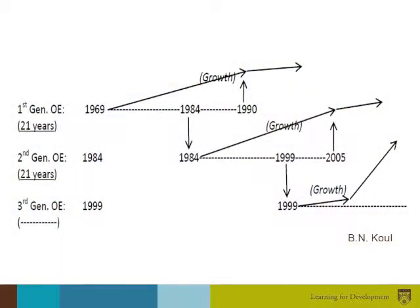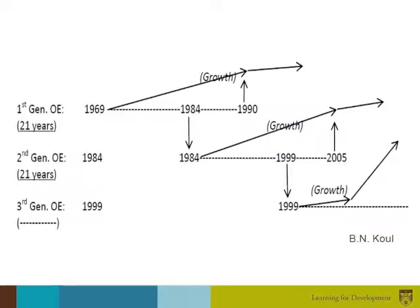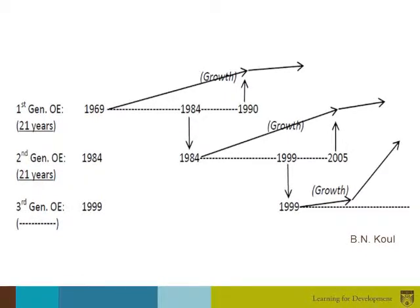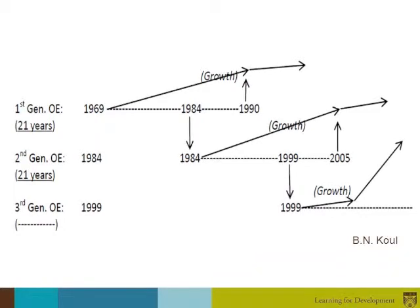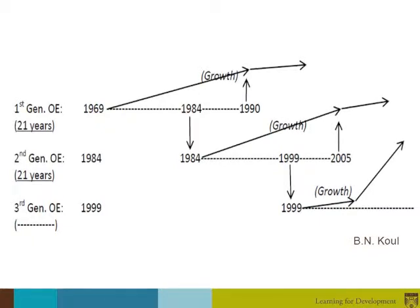This slide sums up the emergence of the three generations of open education models. The first covers the 21 years from 1969 to 1990, the second from 1984 to 2005. In both cases the development is gradual. In the third generation, which could be seen to begin in 1999, we see a phenomenal growth showing that, thanks to technologies, paradigms will change in much shorter time spans than Thomas Kuhn had initially imagined.